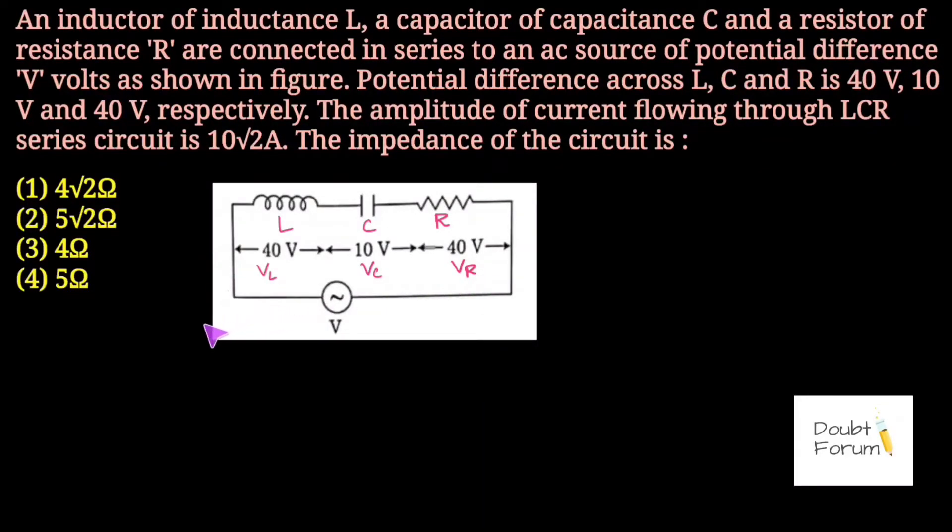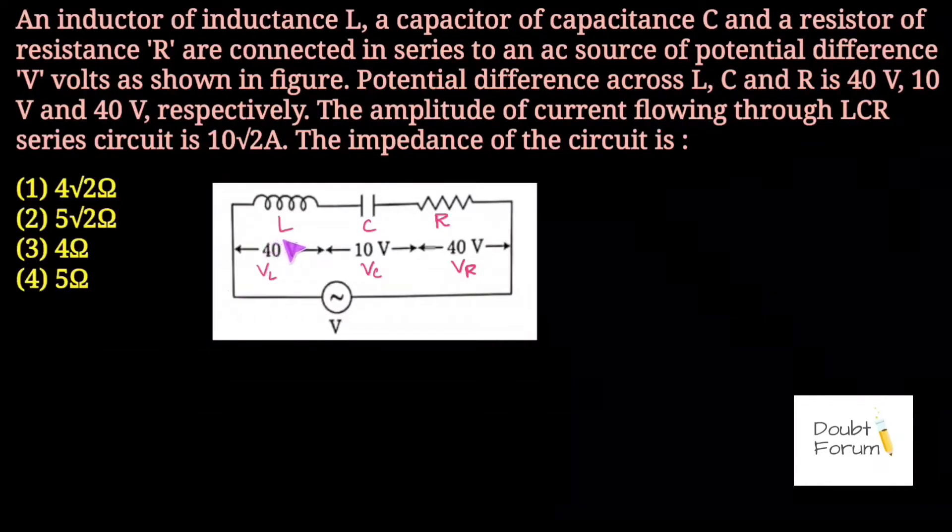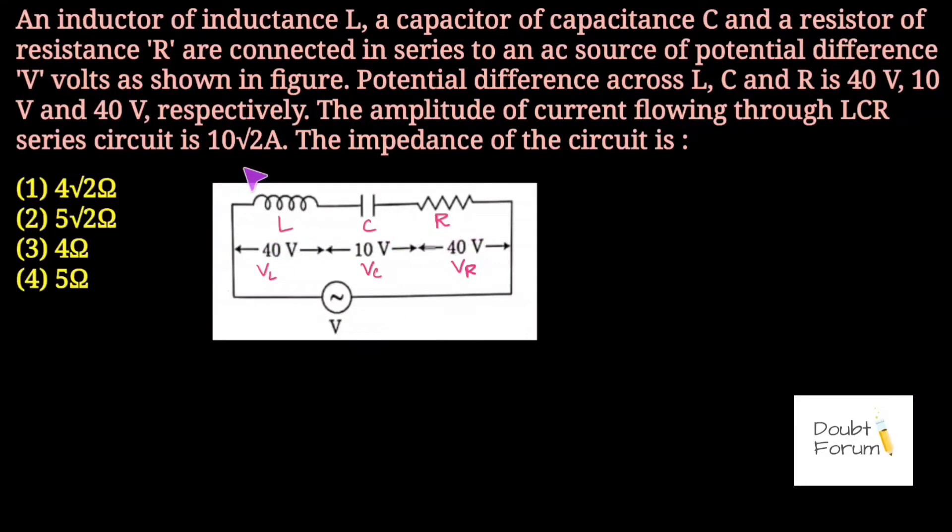Apart from this, the amplitude of current flowing in this LCR circuit is given as 10√2 ampere. The amplitude is the maximum value of current flowing in this circuit, so that maximum value is 10√2 ampere.